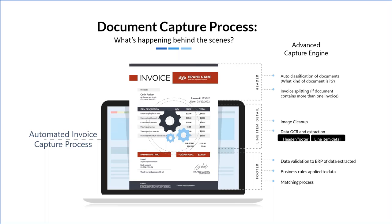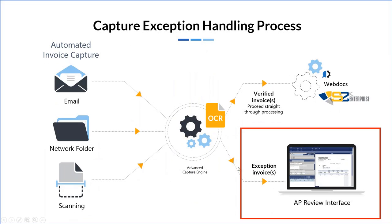Data validation is happening throughout this process. One of the biggest things is the business rules applied — if there are variances on invoices or certain data extracted, we can put business rules in place for approvals and review, flagging items to the AP team. When documents come in through any automated invoice capture method, there are two paths: verified invoices go through straight-through processing, while exceptions go to the verification station.